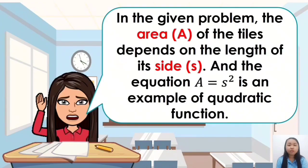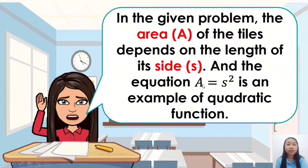Based on the given problem, the area a of the tiles depends on the length of its side s. We have two variables involved: the side is the independent variable, and the area is the dependent variable. The equation a is equal to s squared is an example of a quadratic function.